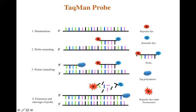The reporter dye emits fluorescence only when it is away from the quencher. During primer extension, Taq polymerase uses its 5' to 3' exonuclease ability to chop off the probe, the reporter is released, and the quencher can no longer prevent its emission — hence the reporter emits its radiation.